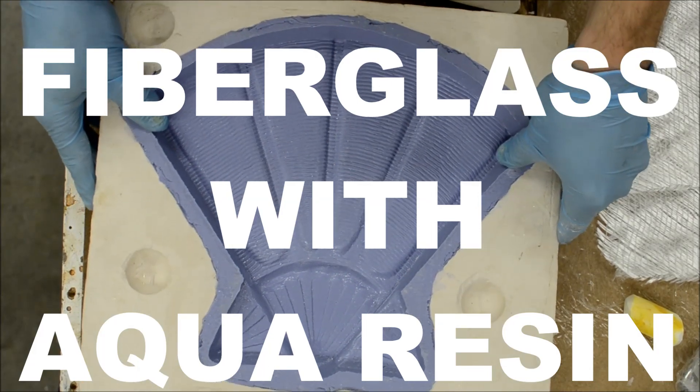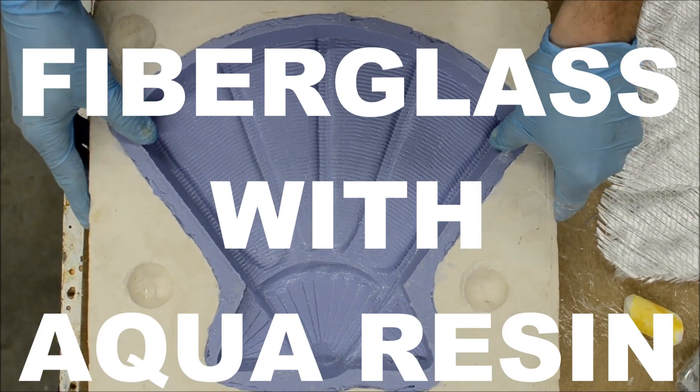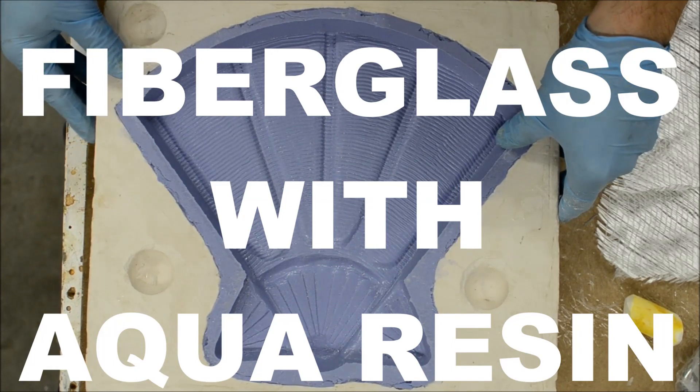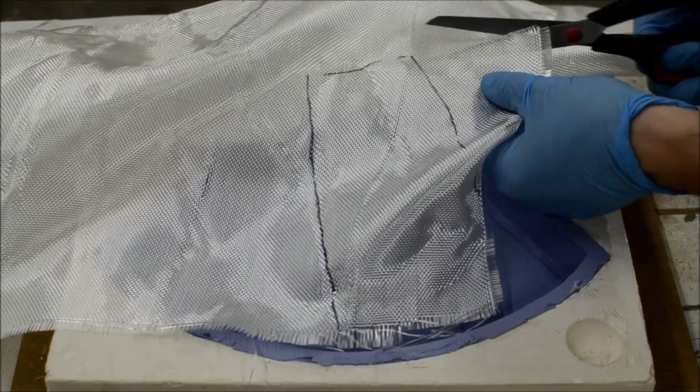You can use aqua resin and fiberglass to make a thin shell of a prop in a one-piece mold. With a silicone rubber mold, you do not need any mold release.